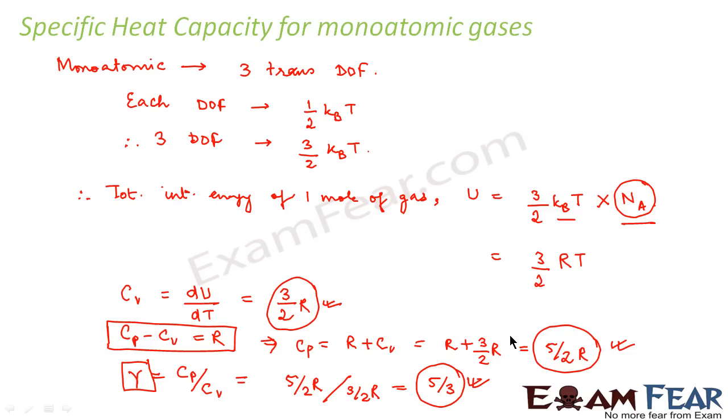So this is how we calculate the specific heat capacity for monoatomic gases. And when experimentally the specific heat capacities of monoatomic gases like helium, argon were found out, it was found to be not exactly equal to this predicted value but it was very much nearby to these values.